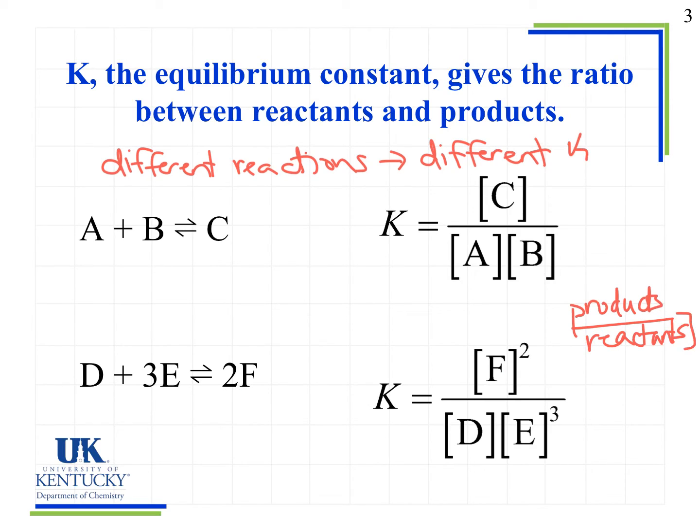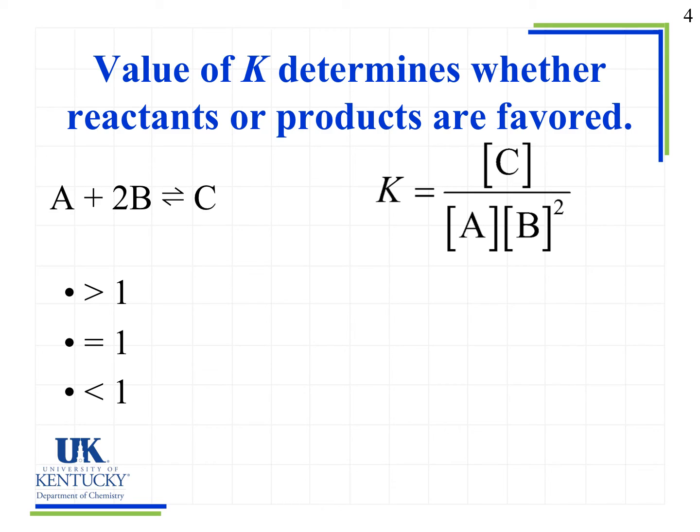We want the concentrations of those species, and that's going to give us something about the value of K. Now let's look at the relative values of K to determine whether reactants or products are favored. When we say the reactants or products are favored, what we're saying is are we going to have a lot of products or a lot of reactants?